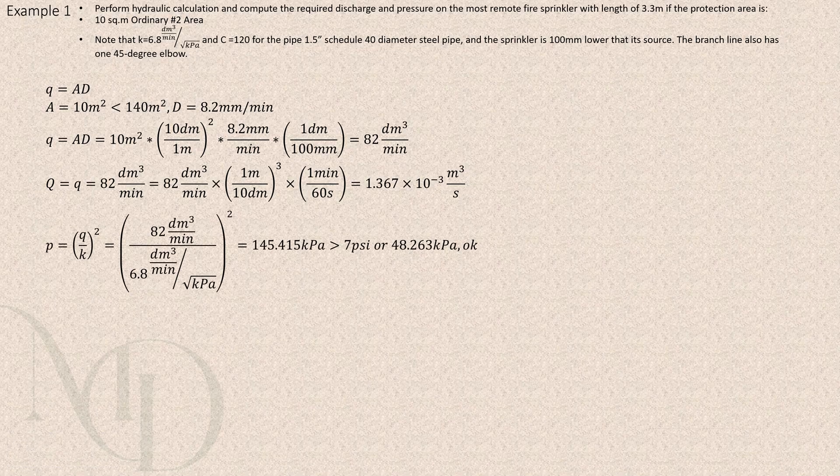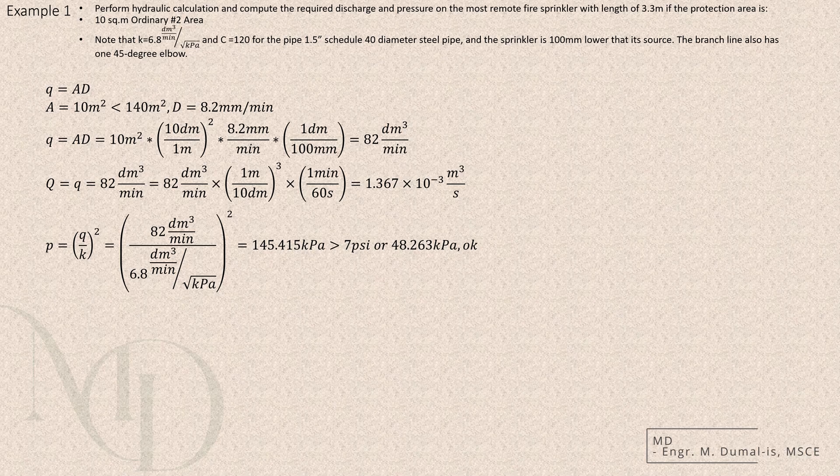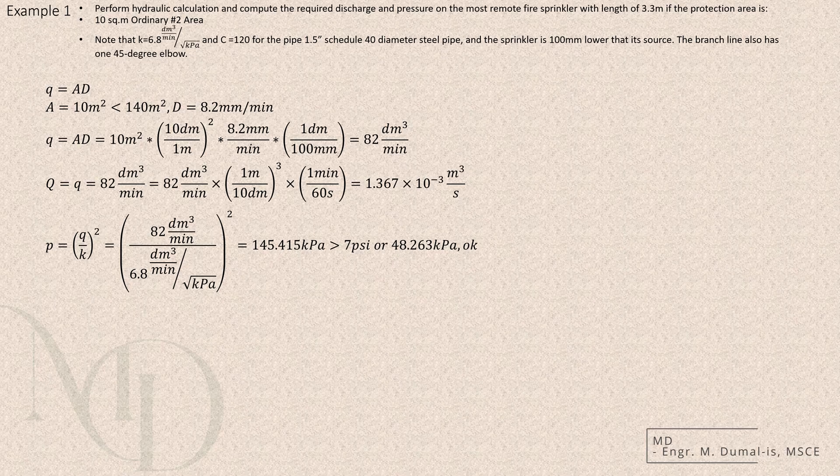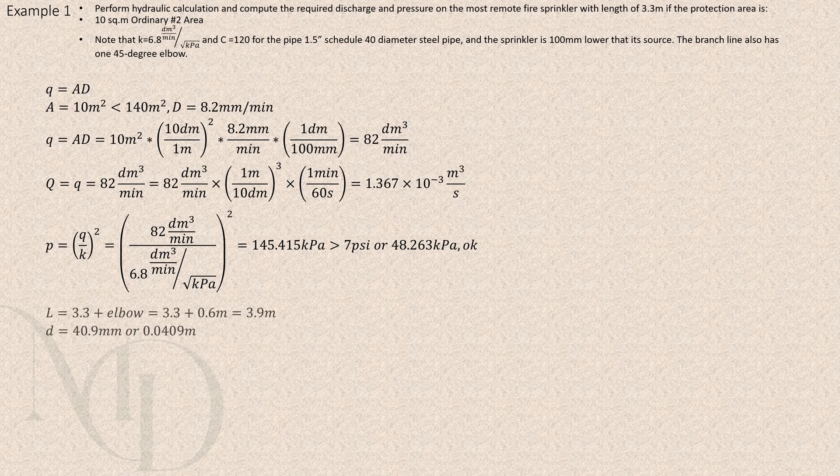After obtaining the discharge, we then compute the expected pressure using the K-factor formula. The computed pressure is then compared to the minimum operating pressure of sprinkler heads of 7 psi or roughly 48.263 kilopascal. If the pressure is less than the minimum, then we'll have to use the minimum value of pressure and recompute the expected discharge of water.